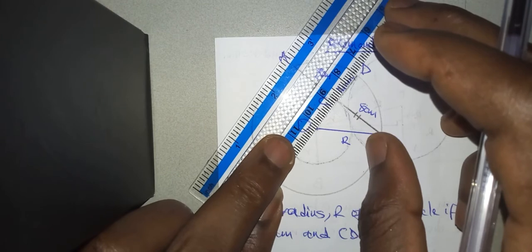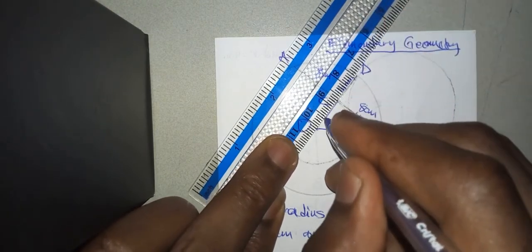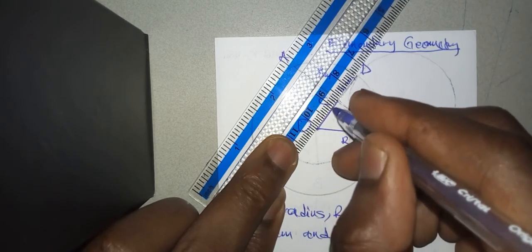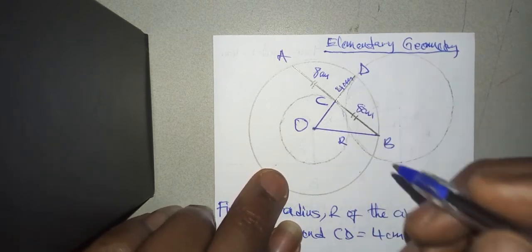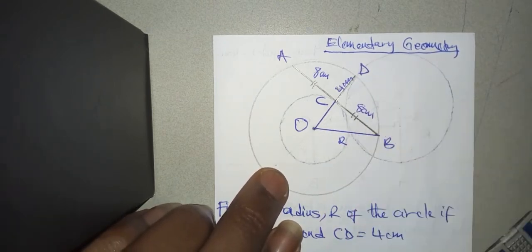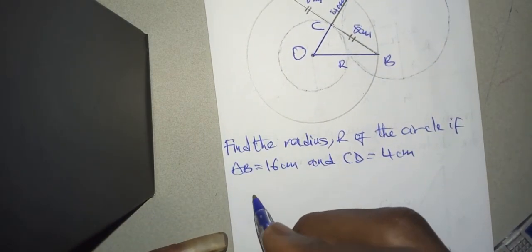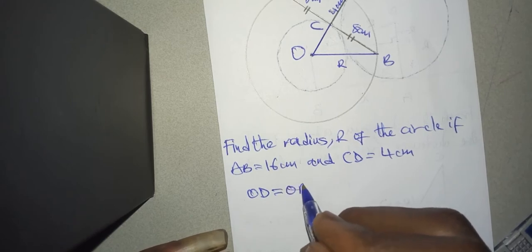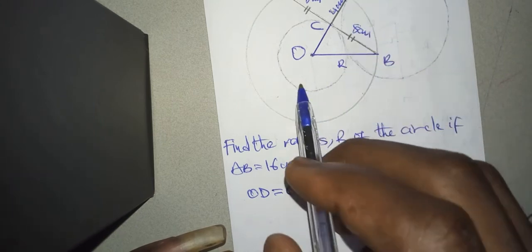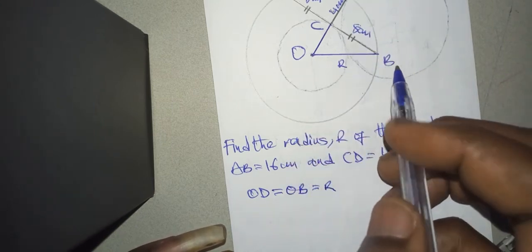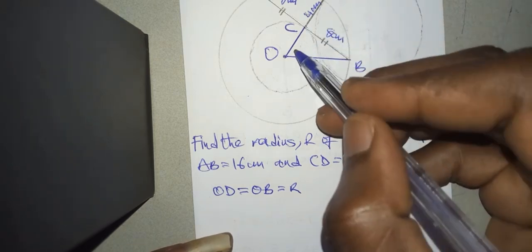I have a complete radius for this. That means OD is also a radius, so I will write here that from the diagram, OD equals OB equals R. That means OD is equal to OB.